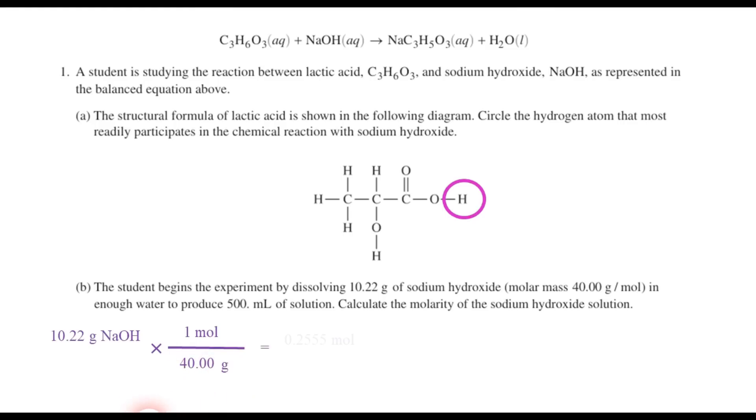So when you divide this out, you find that we have 0.2555 moles of sodium hydroxide. Now, we just have to take that amount and divide it by the liters, which will be half a liter. 500 milliliters is 0.500 liters. So when you divide that, you find that the molarity is 0.511 molar. So that's Part B.